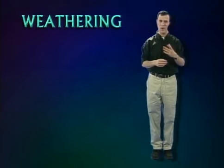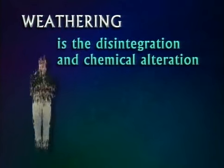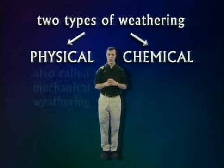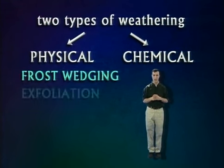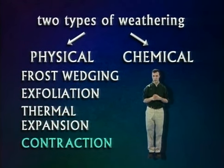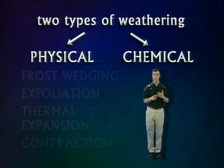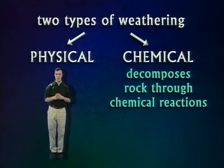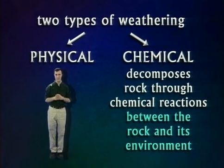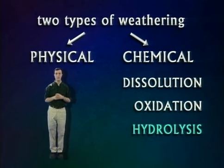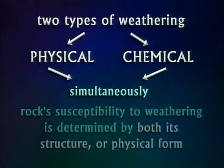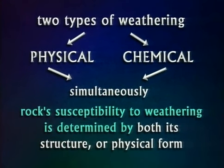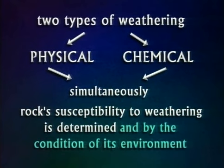Let's review. Weathering is the disintegration and chemical alteration of rocks on the surface of the earth. There are two types: physical weathering — also called mechanical weathering — which physically breaks rocks into smaller pieces; processes include frost wedging, exfoliation, and thermal expansion and contraction. Chemical weathering decomposes rock through chemical reactions; processes include dissolution, oxidation, and hydrolysis. Physical and chemical weathering occur simultaneously, and a rock's susceptibility is determined by both its structure and its environment.